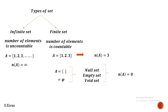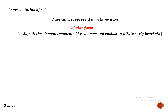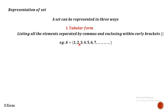Now let's see how to represent a set. A set can be represented in three ways. The first is tabular form, which means listing all the elements of the set, separating them with commas, and enclosing them within curly brackets. For example: A = {1, 2, 3, 4, 5, 6, 7, ...}. This way of writing is called tabular form.